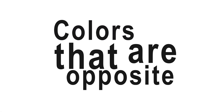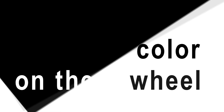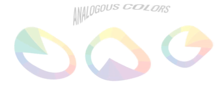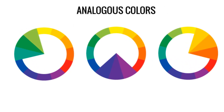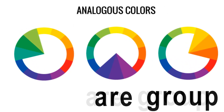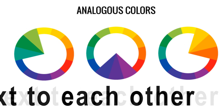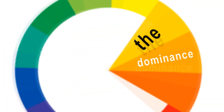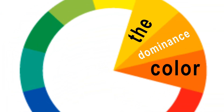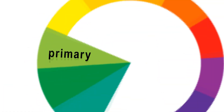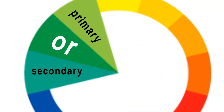Colors that are opposite each other on the color wheel are considered to be complementary colors. Analogous colors are groups of three colors that are next to each other, with one being the dominant color which tends to be a primary or secondary color, and one on either side of the color.